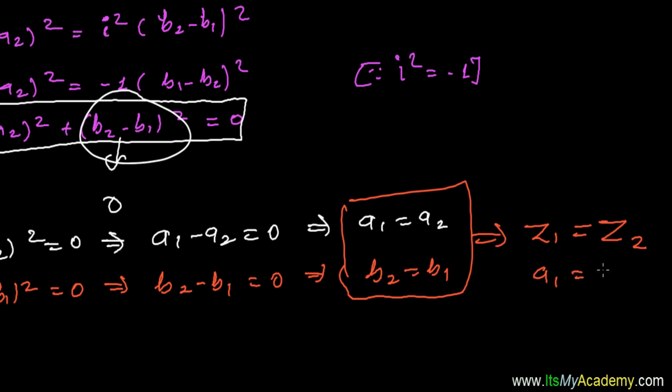And similarly the imaginary part, that real part containing real number b1 equals to b2. So this is the condition of two complex numbers when they get equal.